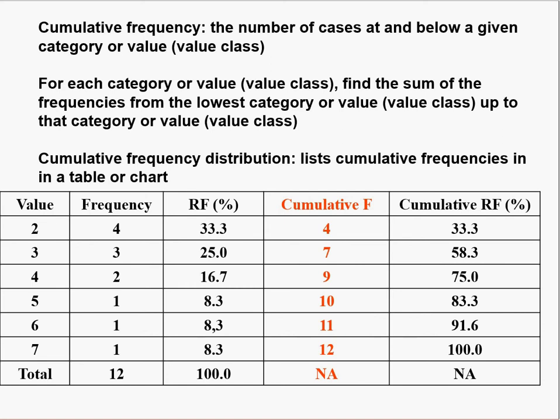We can also create a cumulative frequency. Cumulative frequency is the number of cases at or below a given category or value. For example, for the value 4, the cumulative frequency is 9, meaning there are nine cases in the data set that have a value of 4 or below.